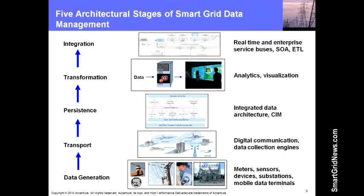Our point of view is that this data supports multiple business processes if used properly. When we look at the problem of managing data coming from the smart grid, we think about it in terms of five big stages — just to break it down into pieces that are more manageable. These stages are probably familiar to a lot of people, and we use them to help us understand how to architect solutions for data management.